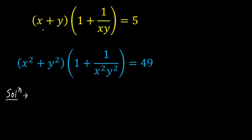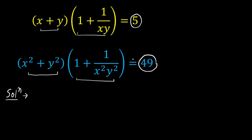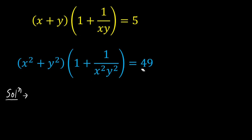Hello students. In this video we are going to solve: (x + y) multiplied by (1 + 1/xy) equals 5, and (x² + y²) multiplied by (1 + 1/x²y²) equals 49, and we will find out the values of x and y. Let us consider the first expression as equation 1 and the second as equation 2.